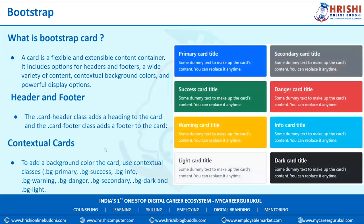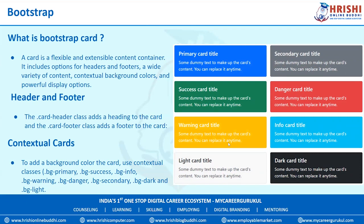For contextual card colors, to add a background color to a card use contextual classes like bg-primary, bg-success, bg-info, bg-warning. Just as we used to give background colors to containers, buttons, and text, the same can be applied to cards. The contextual color classes include bg-primary, success, info, warning, danger, secondary, and so on.